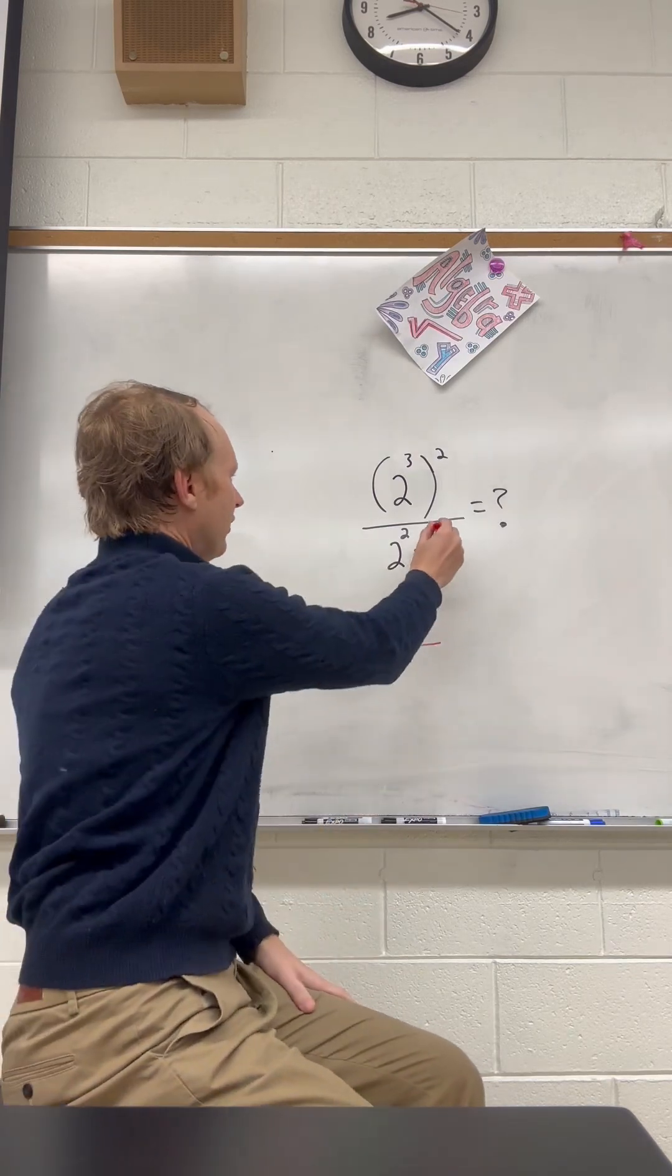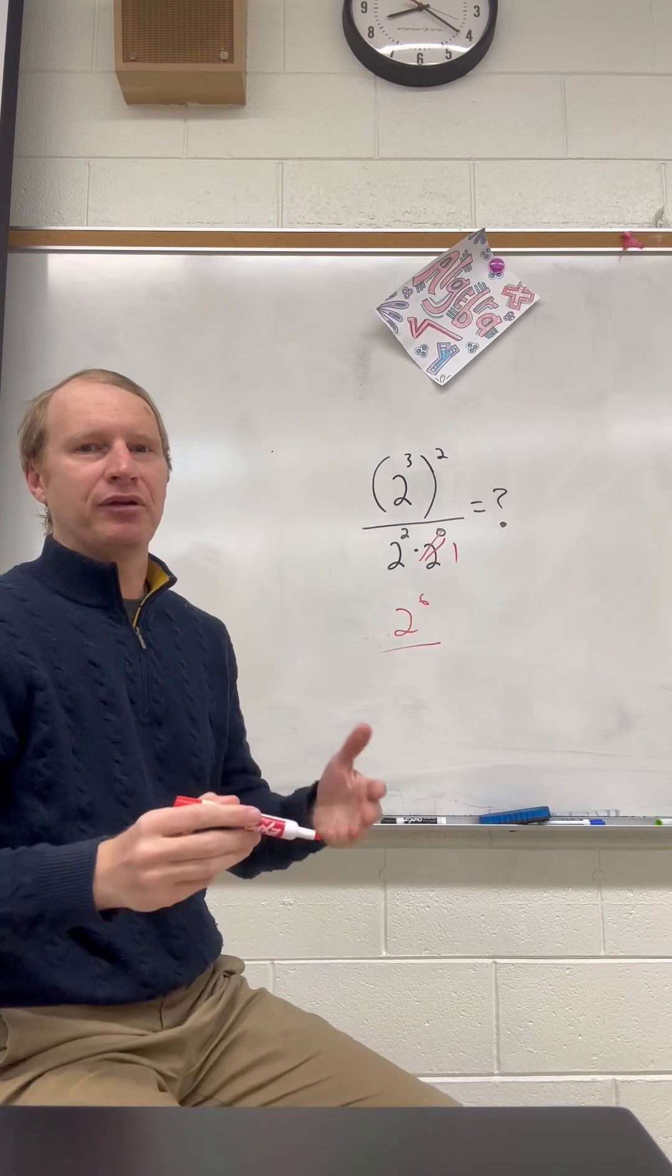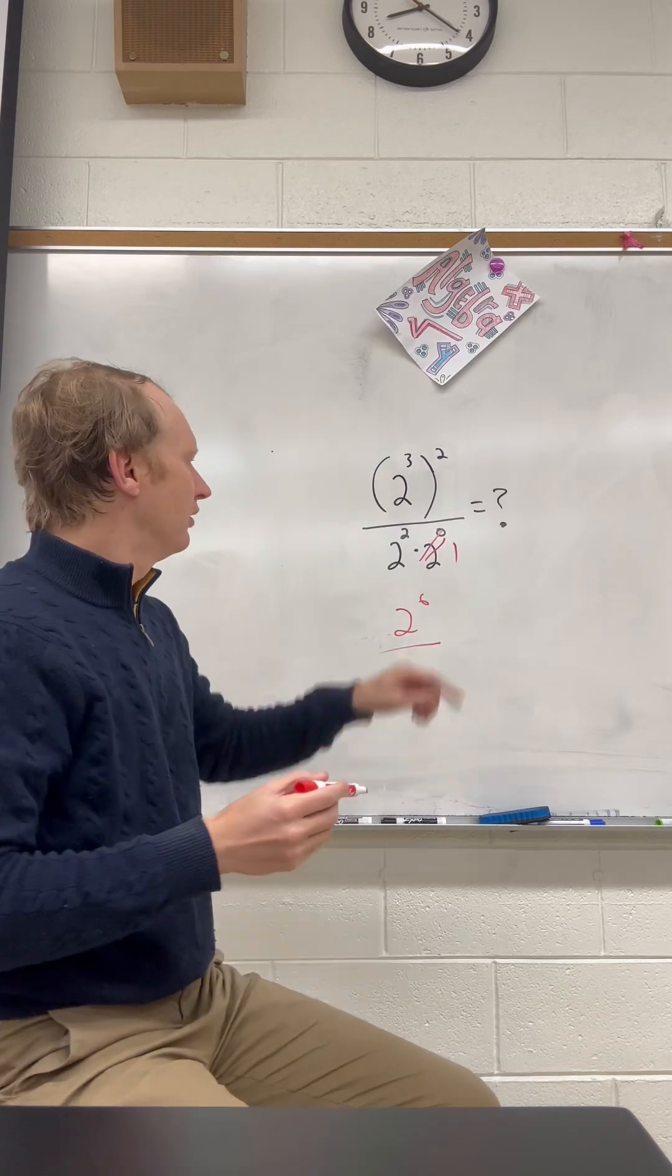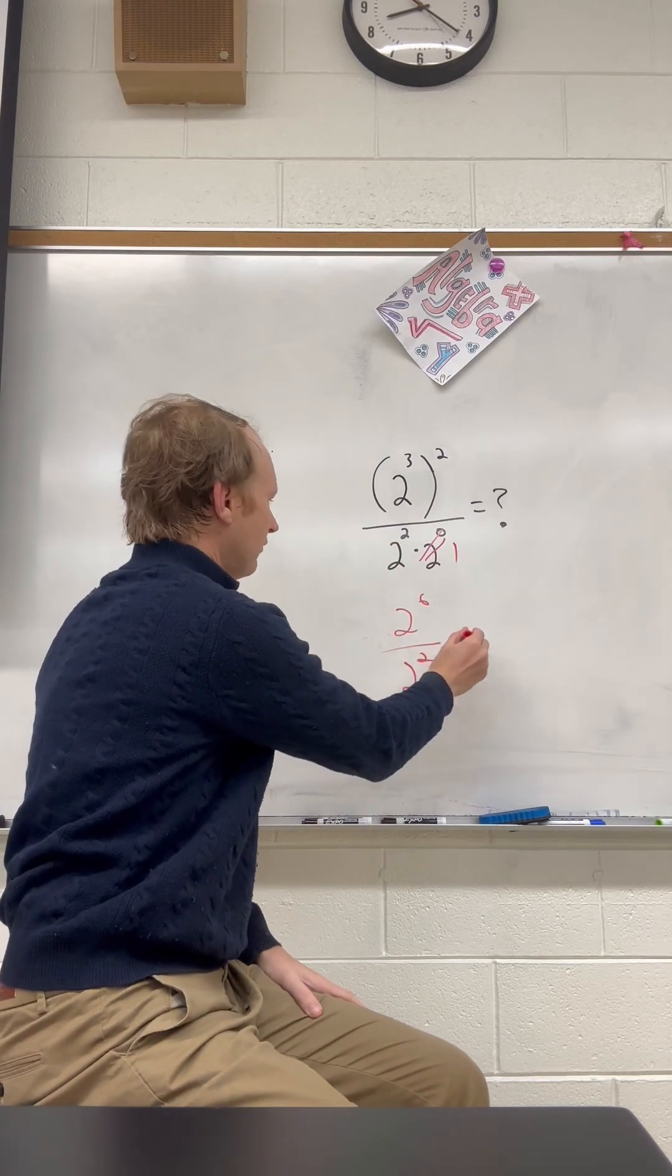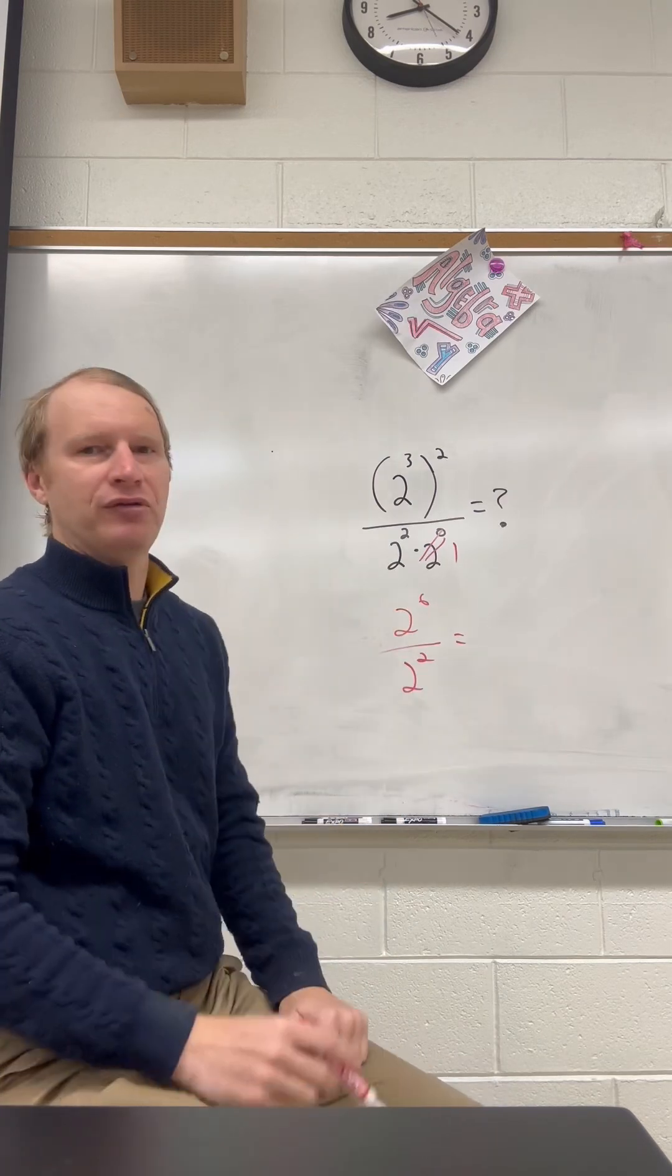Now this 2 to the 0 here is actually just 1. Anything to the 0 power is 1. So we end up with 2 squared. Now we have 2 to the 6th over 2 squared.